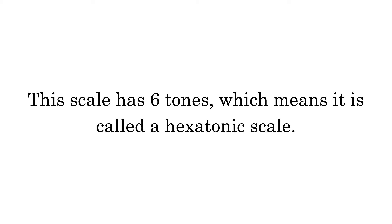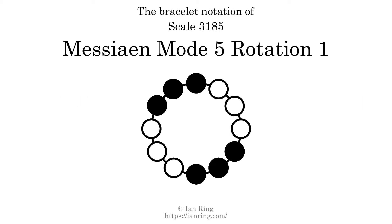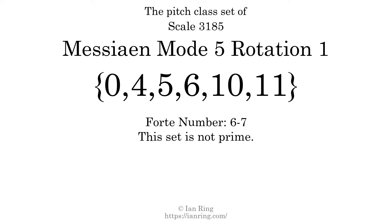This scale has 6 tones, which means it is called a hexatonic scale. This is a bracelet notation diagram of scale 3185. The shaded circles represent tones that appear in the scale, and they are read clockwise, starting at the top. The pitch class set for this scale is 0, 4, 5, 6, 10, 11.